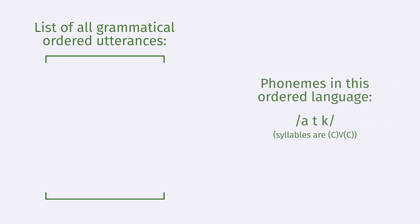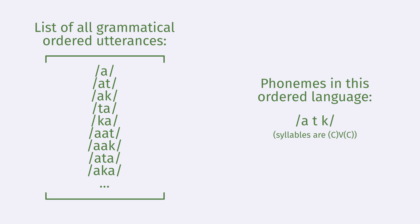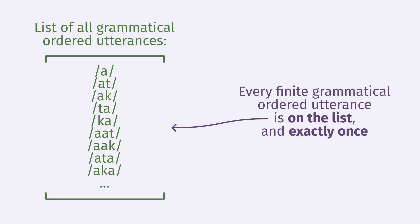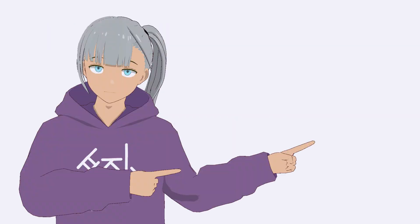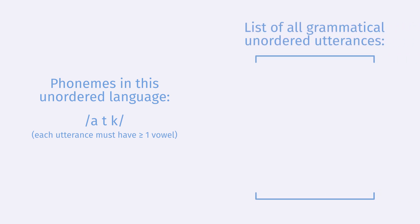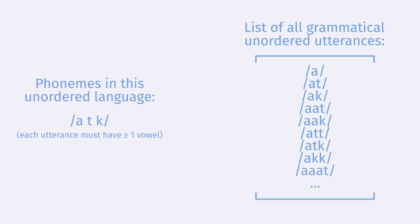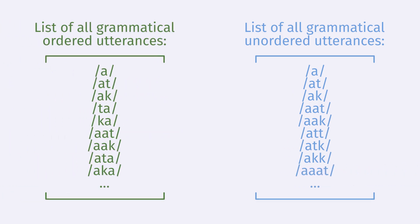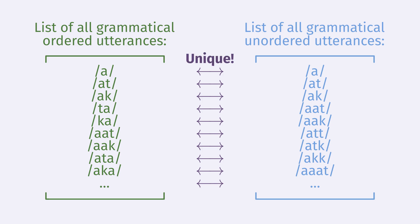First, we construct a list of all finitely long grammatical utterances in the ordered language. Starting with an empty list, we add all grammatical utterances of length one phoneme, then length two phonemes, then three phonemes, etc. There is a finite number of grammatical utterances of each length, so every finitely long grammatical utterance will eventually be added to the list exactly once. We then construct an analogous list for the unordered language — starting with an empty list, we add all possible unordered utterances containing a total of one phoneme, then two phonemes, three phonemes, etc. Since both lists have the property that each finite utterance appears exactly once, pairing them entry-to-entry means each ordered utterance maps to a unique unordered utterance, and vice versa.